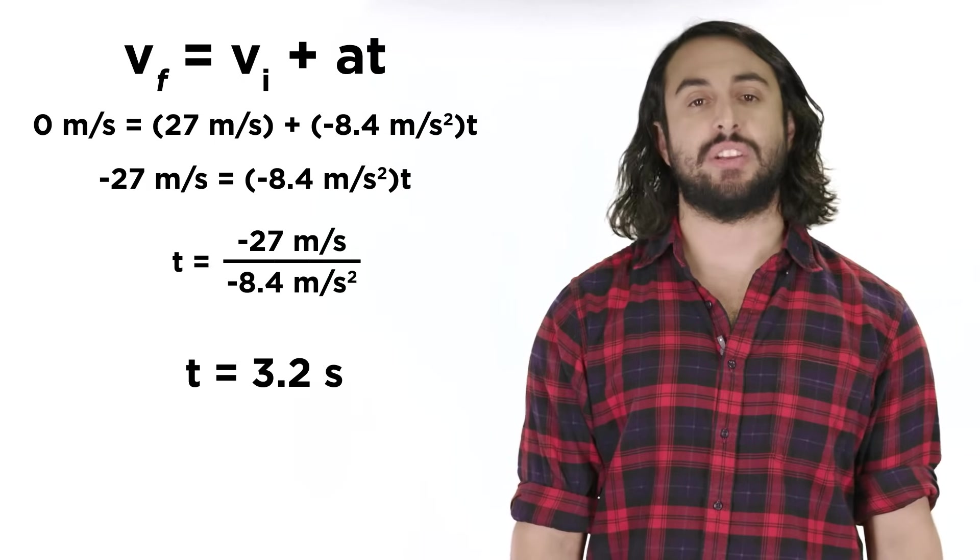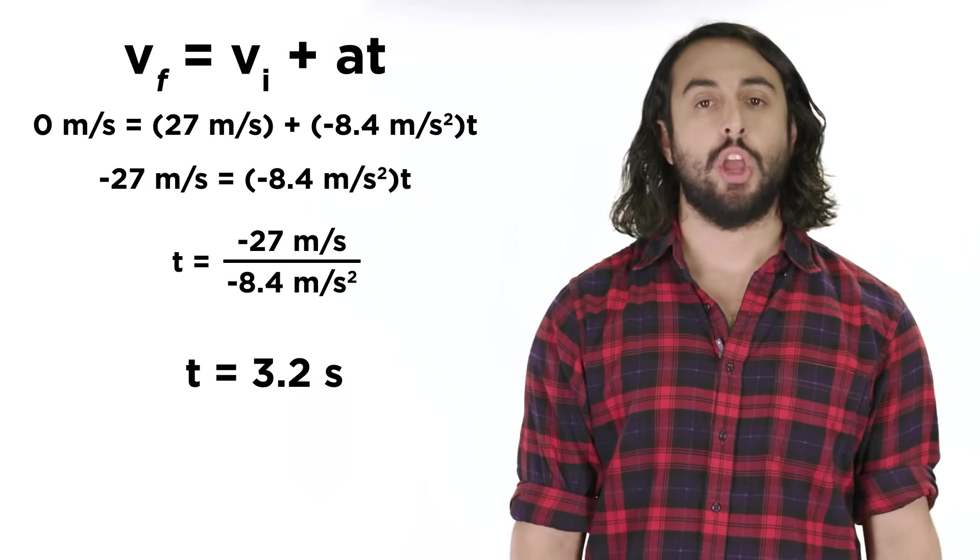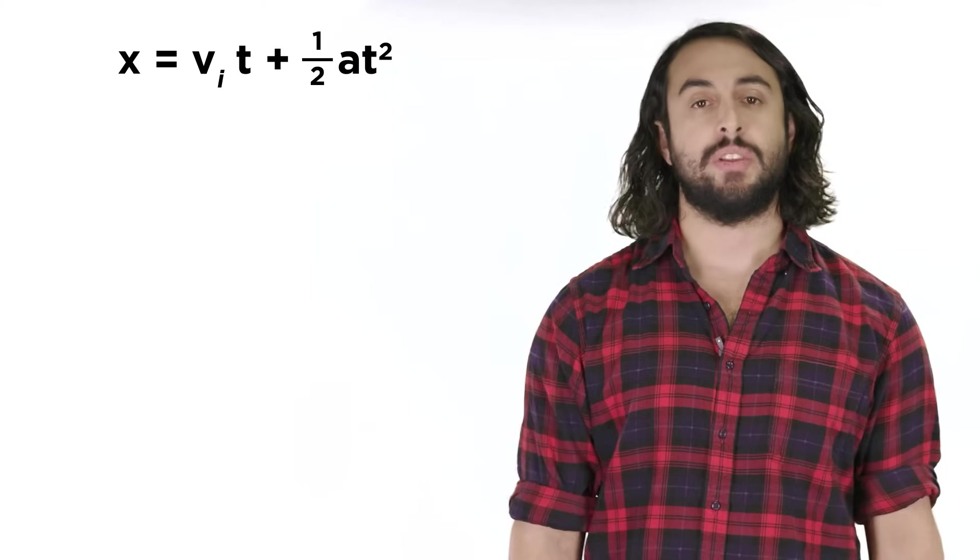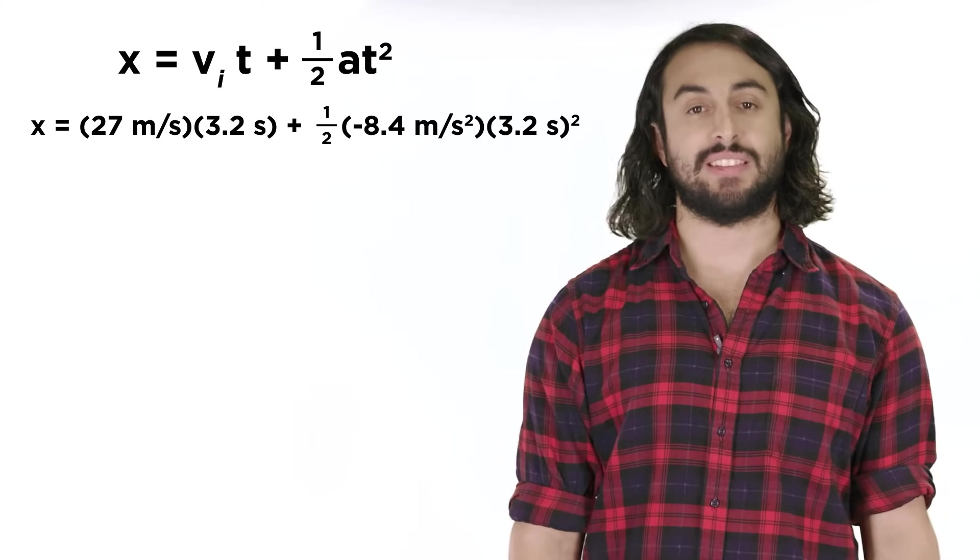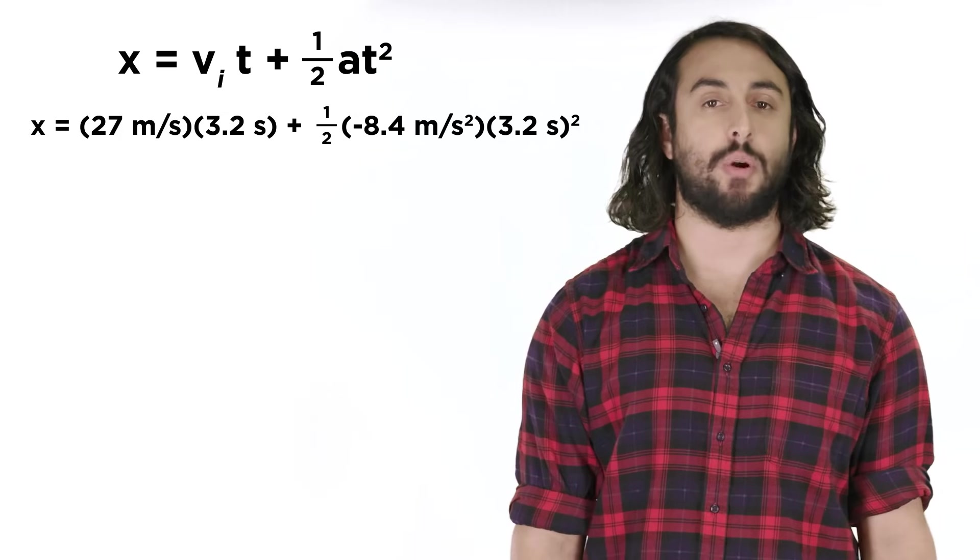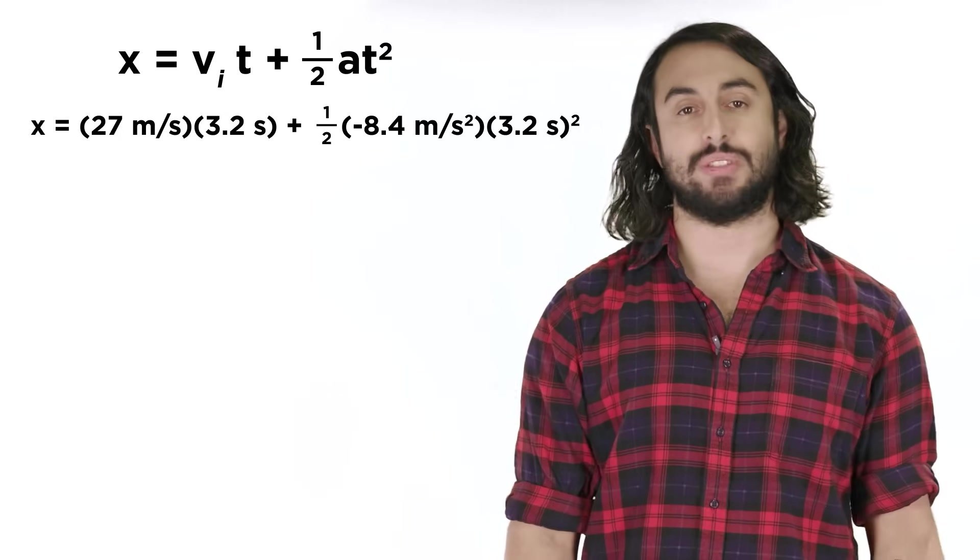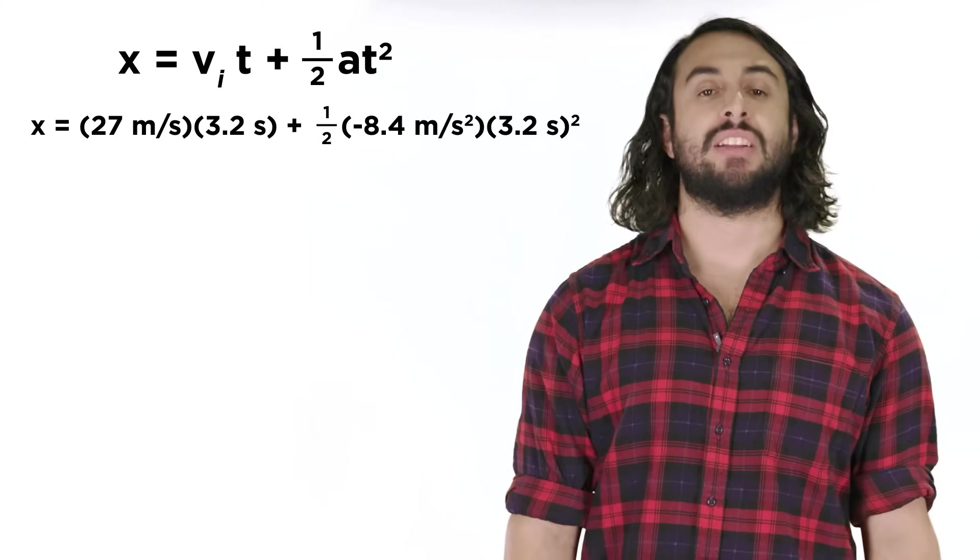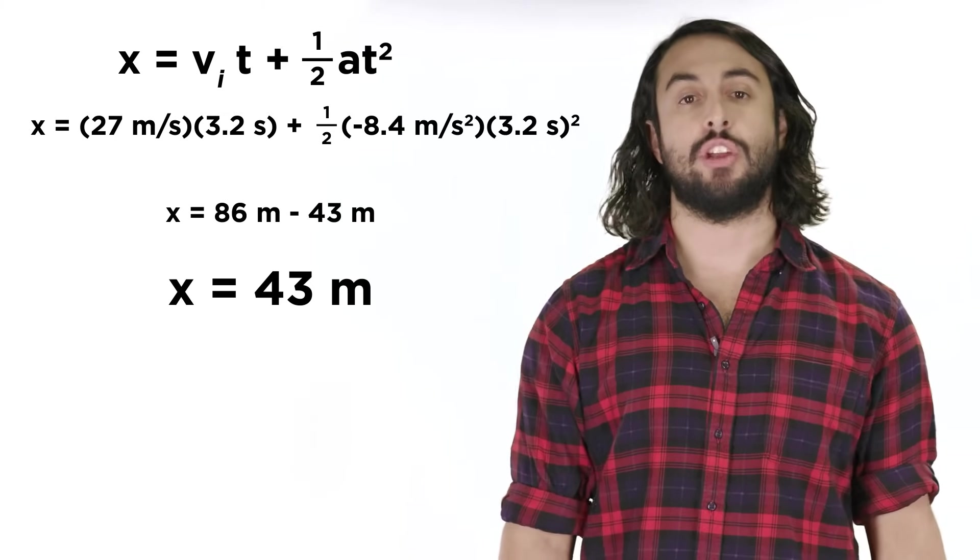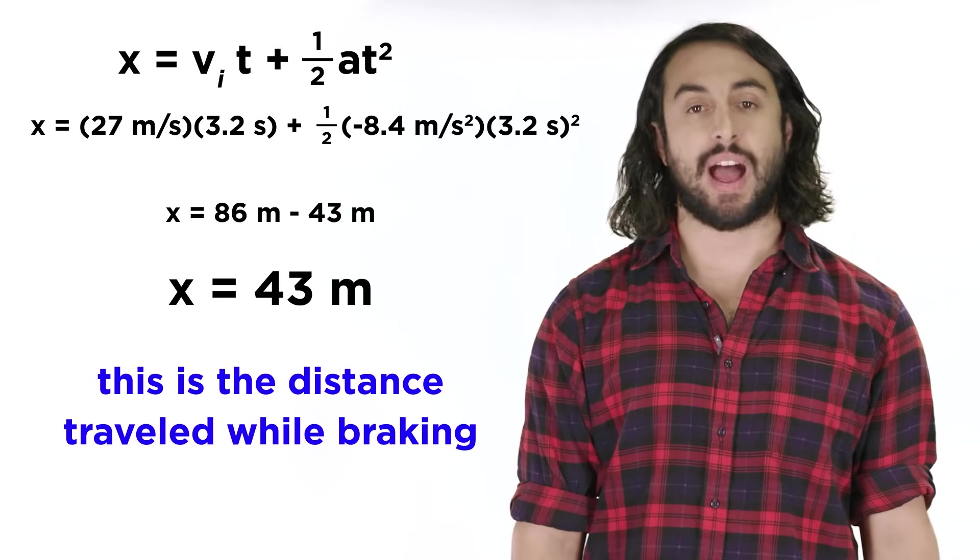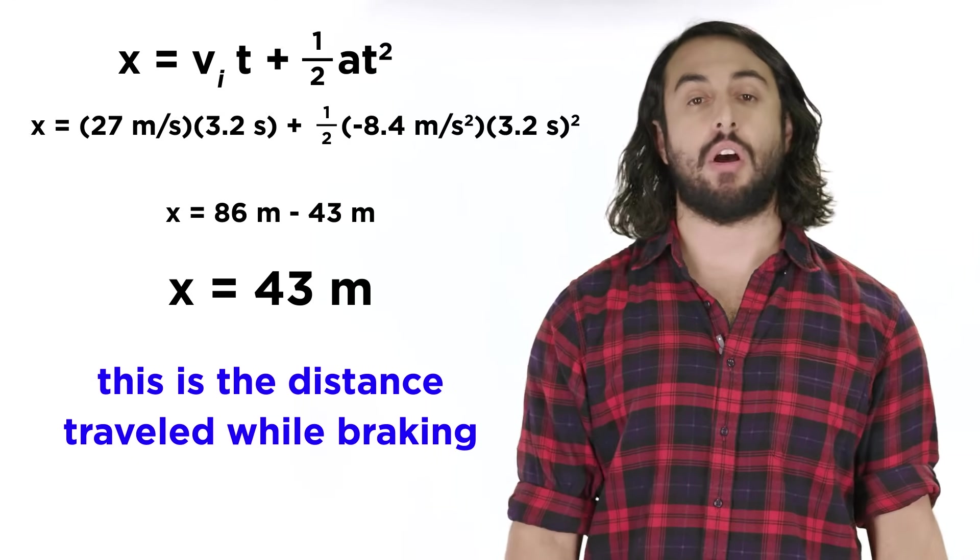Now that we know the time associated with this event, we can use this other equation to find the braking distance. We plug in the initial velocity and acceleration we mentioned before, as well as the 3.2 seconds we just calculated, and solve for X, which will be about 43 meters traveled from the moment you applied the brakes to the moment that the car stops moving.